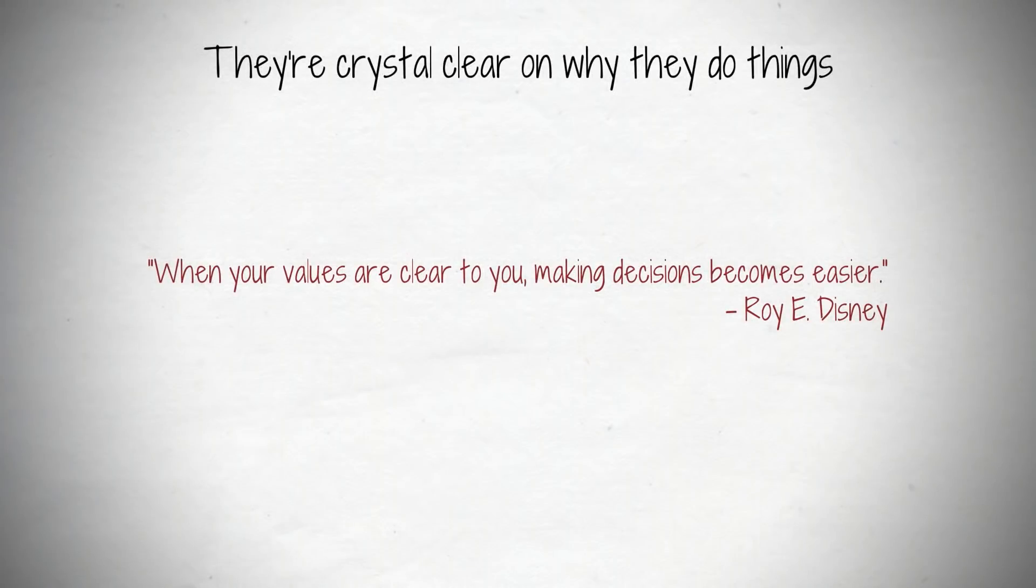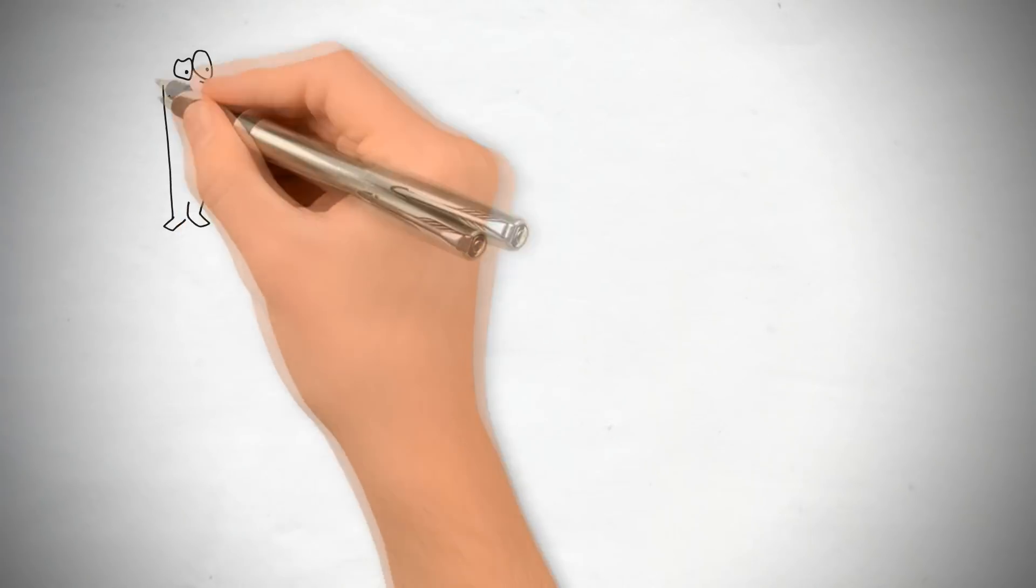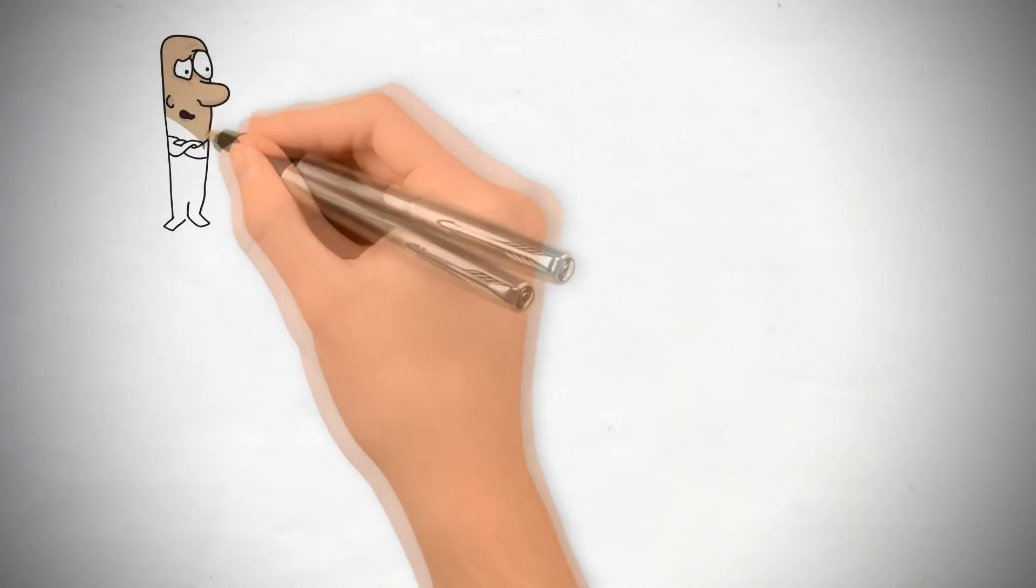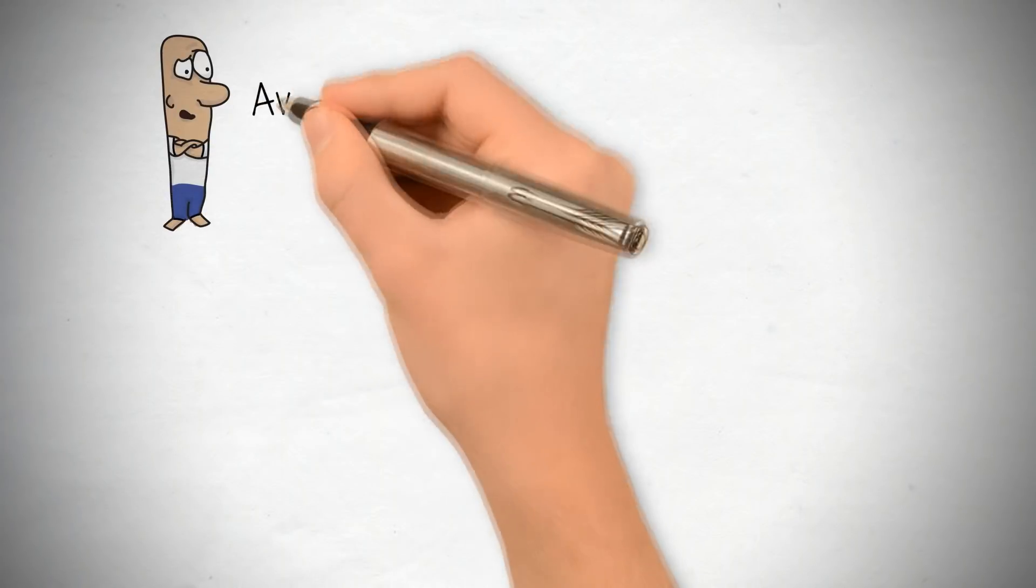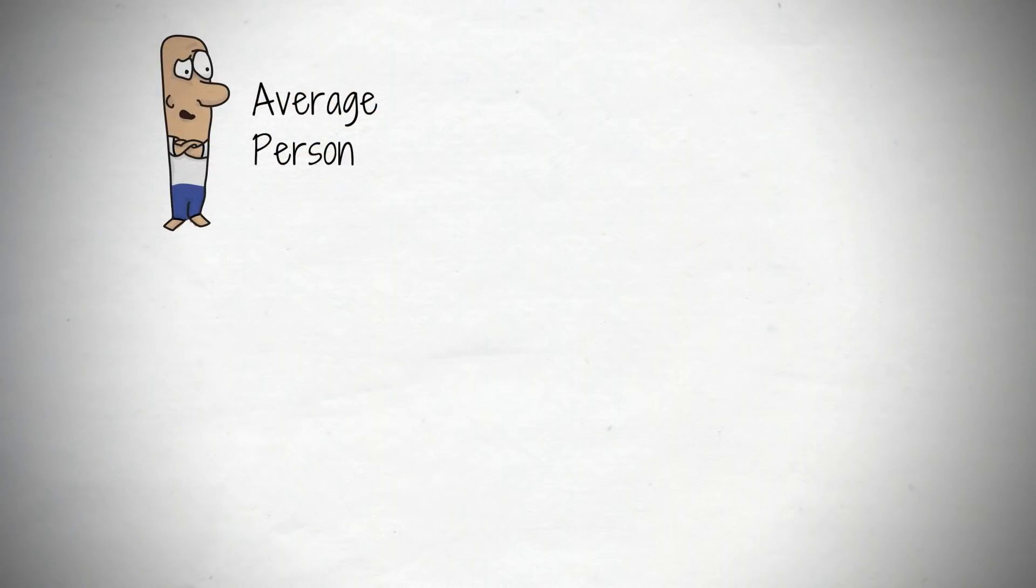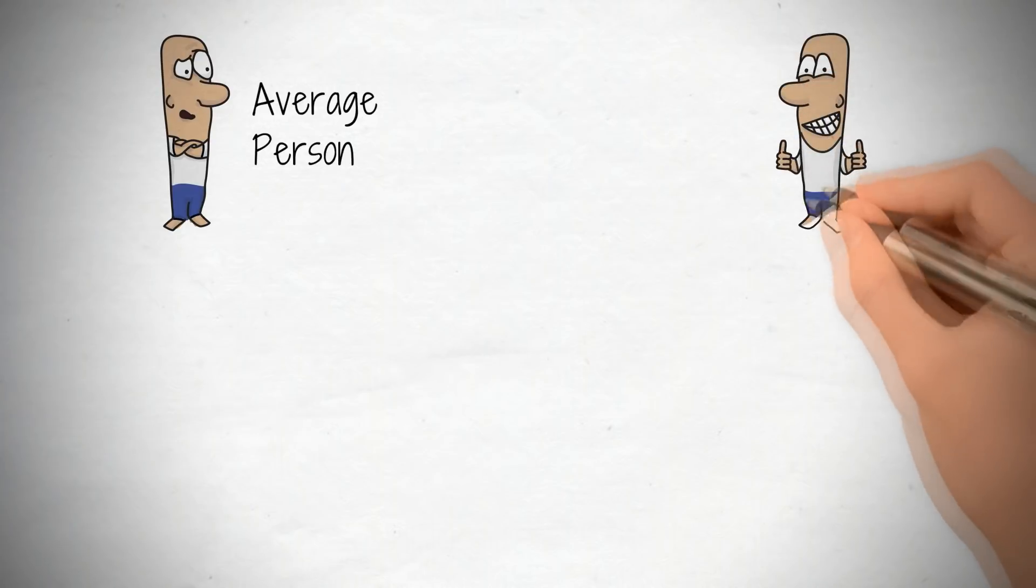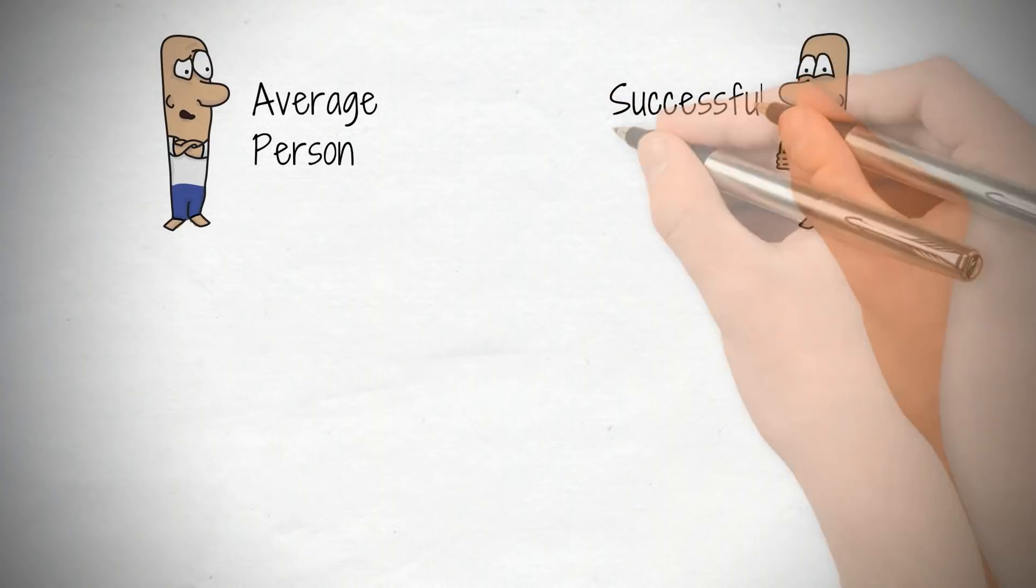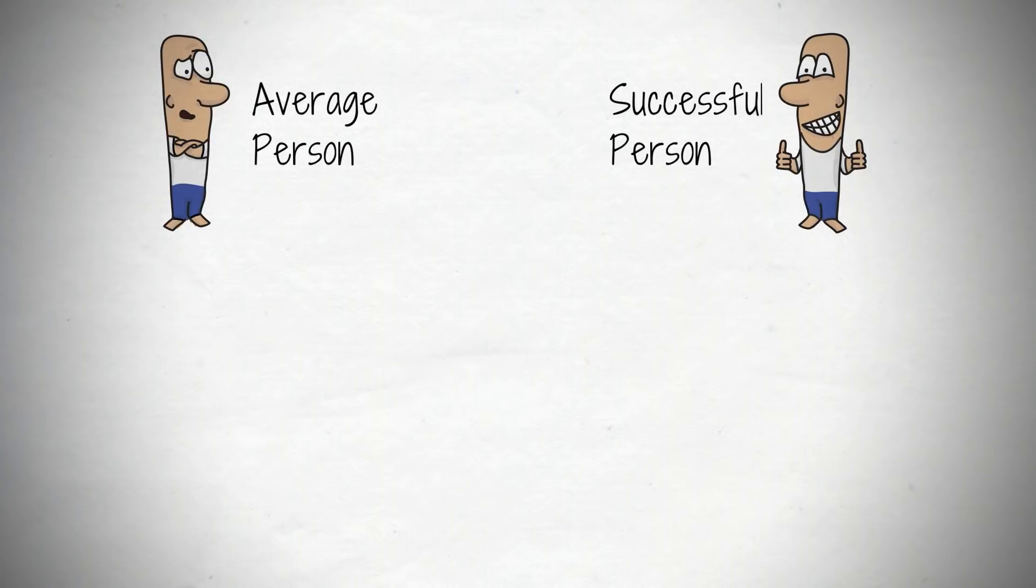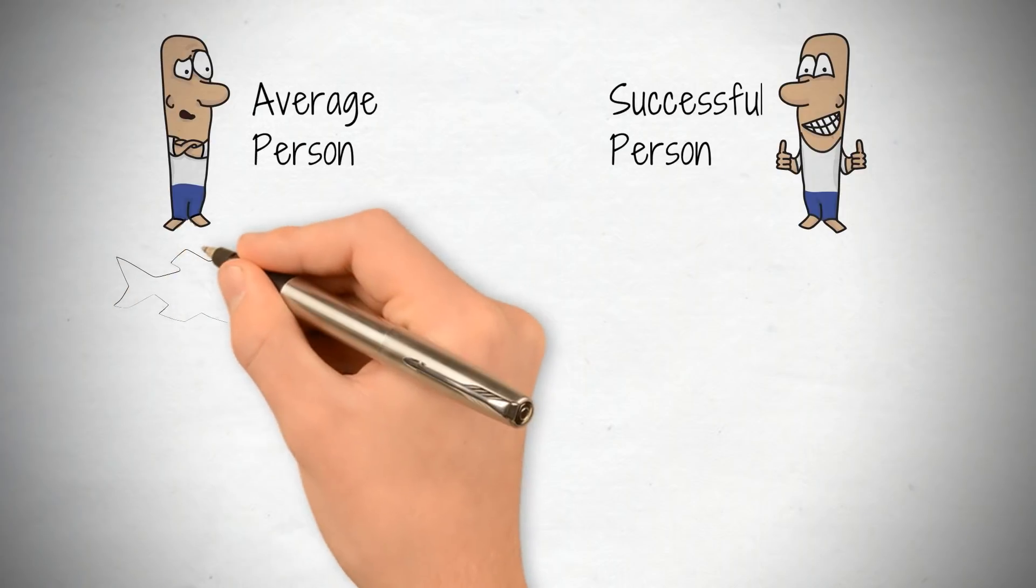When most people take action, they only have vague goals. When highly successful people set out on a certain course of action, they know exactly why they're doing it and what result they're aiming for. If someone is totally clear about why they're doing something, they can explain a precise chain of events that they expect to result from it. Here's how the why of highly successful people differs from that of most people.